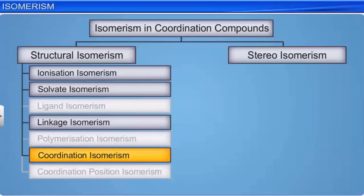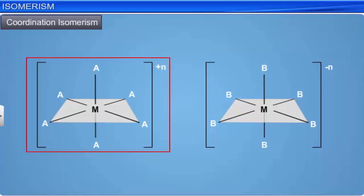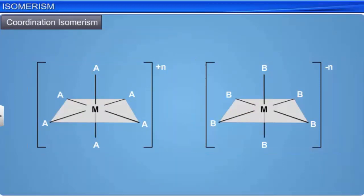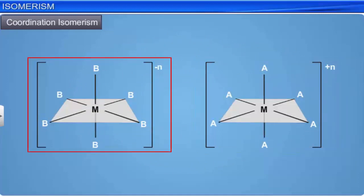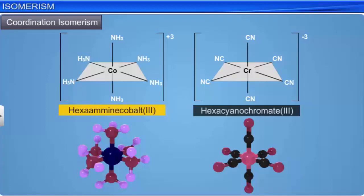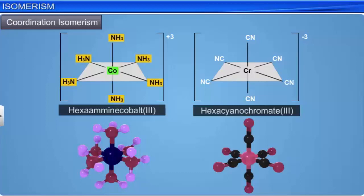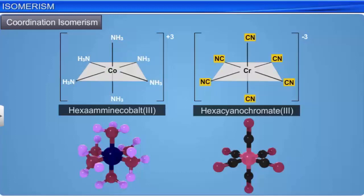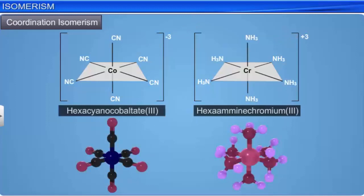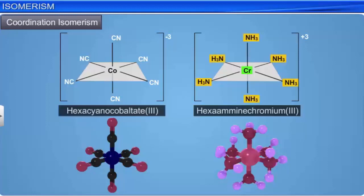Coordination isomerism is another type of structural isomerism, caused by an interchange of ligands between the anion and the cation. For example, in hexaaminecobalt(3) hexacyanochromate(3), the ammonia ligands are bound to Co3+ while cyanide ligands are bound to Cr3+. In its coordination isomer, hexaaminechromium(3) hexacyanocobaltate(3), the ammonia ligands are bound to chromium while the cyanide ligands are bound to cobalt.